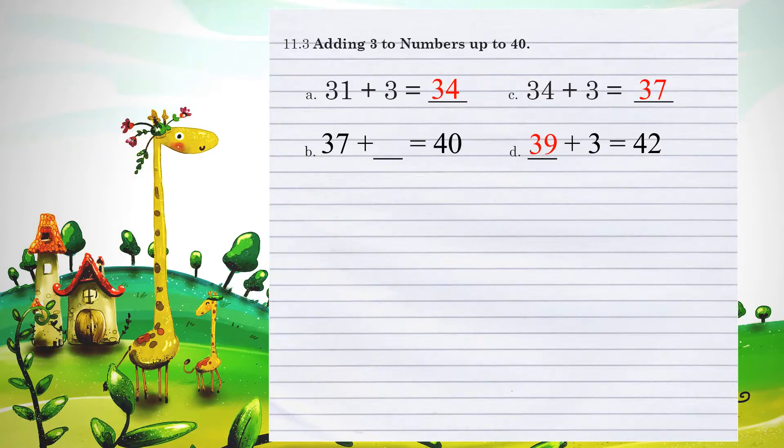Let's look at example B. 37 plus what number equals 40. What would I have to combine with the 7 to make this a 40? Again, you think in your head. 7 to 8 to 9 to 10 means that I am adding 3 positions.